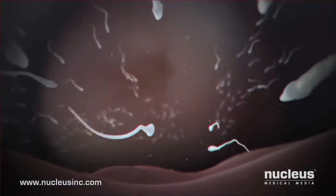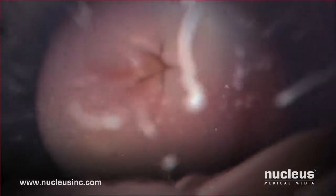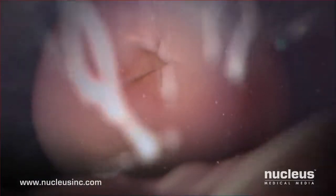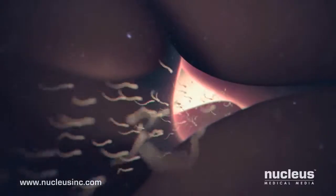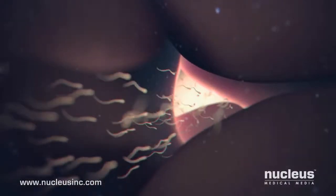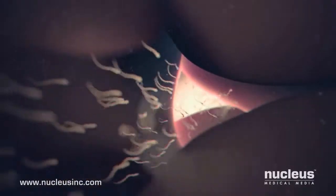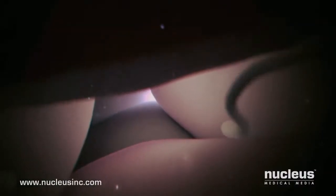Next, the sperm must pass through the cervix, an opening into the uterus. Usually it remains tightly closed, but here the cervix is open for a few days while the woman ovulates. The sperm swim through the cervical mucus, which is thinned to a more watery consistency for easier passage.